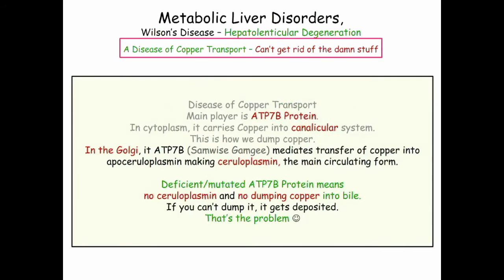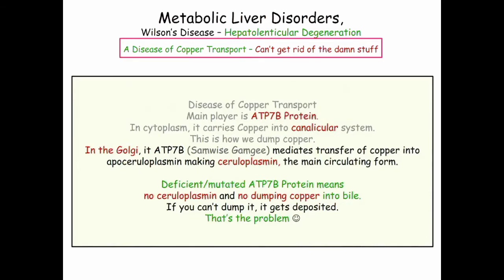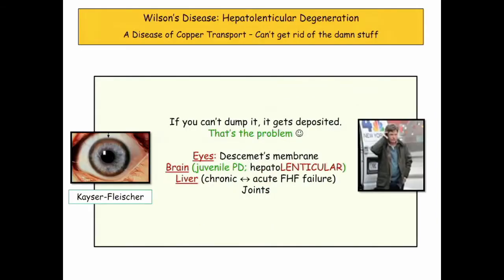In the Golgi, the ATP protein takes the copper and attaches it to ceruloplasmin, which is a circulating form — ceruloplasmin is a carrier of copper and a marker of Wilson's disease. If you have Wilson's disease, you're not making ceruloplasmin. So a low ceruloplasmin is a marker for Wilson's disease. It's a deficiency of the transport protein: no ceruloplasmin, no dumping of copper into the bile. If you can't get rid of it, copper deposits.